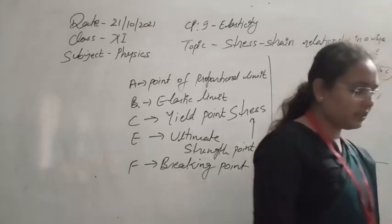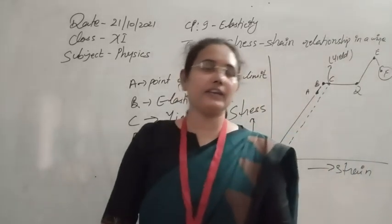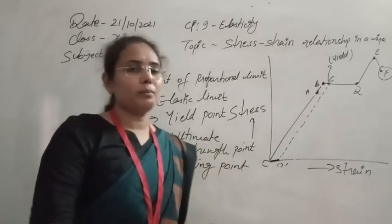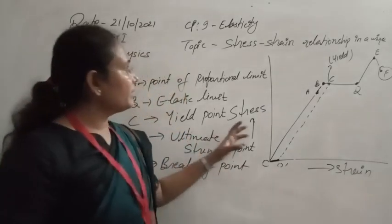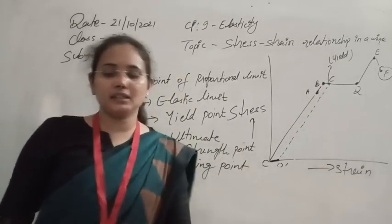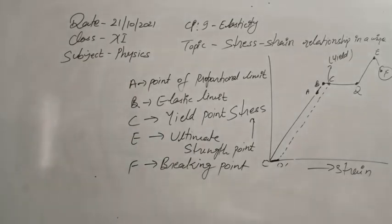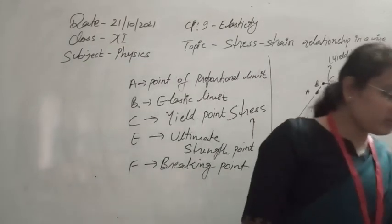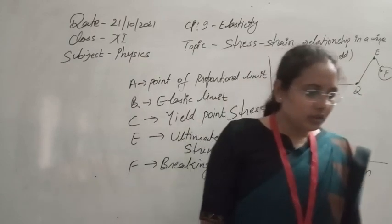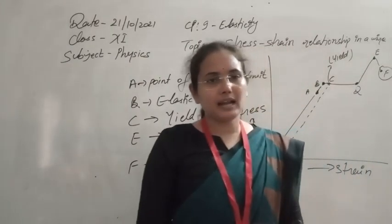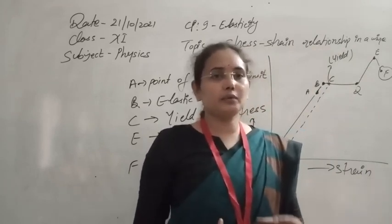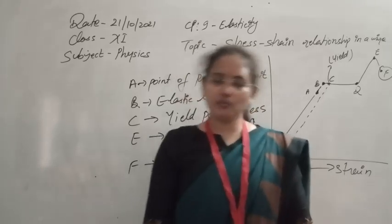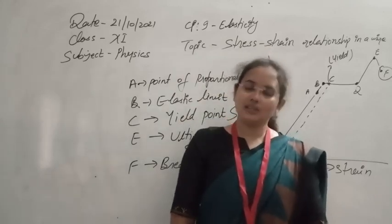So the stress-strain relationship and all these important points are now clear. From O to A: Hooke's law is obeyed (proportional limit). A to B: elastic but not linear (elastic limit at B). B to C: permanent deformation begins. C to D: yield region, wire flows. D to E: wire strains again up to ultimate strength. Beyond E to F: wire breaks at the breaking point. In the next class we will see how to apply this knowledge and discuss different kinds of elastic materials.